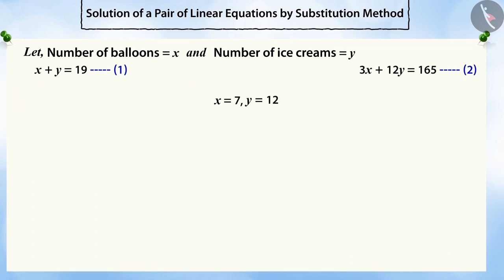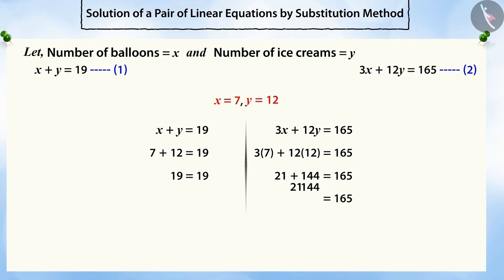Therefore, x is equal to 7 and y is equal to 12 is the unique solution to this equation. Substituting the values of x and y in both equations and solving them, we can verify that this is the only unique solution. Therefore, Rahul bought 7 balloons and 12 ice creams.